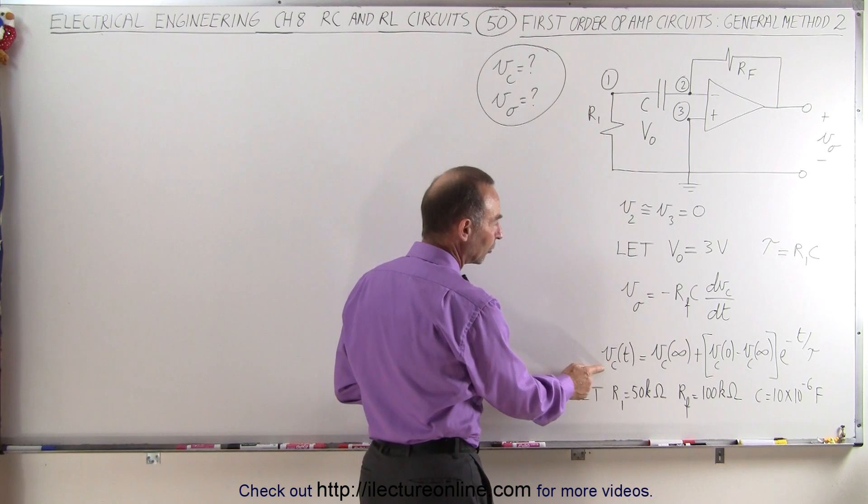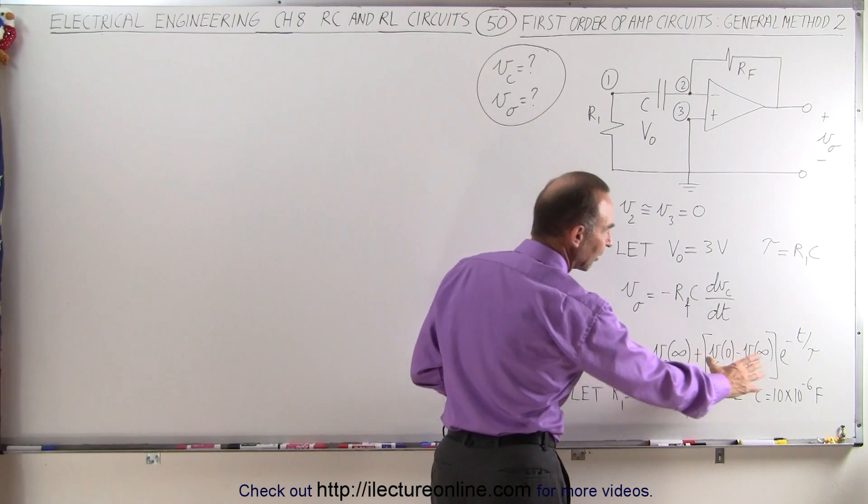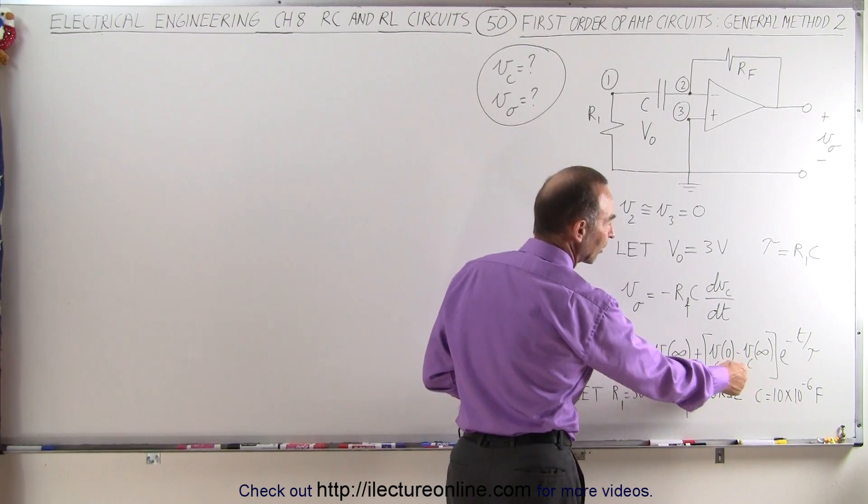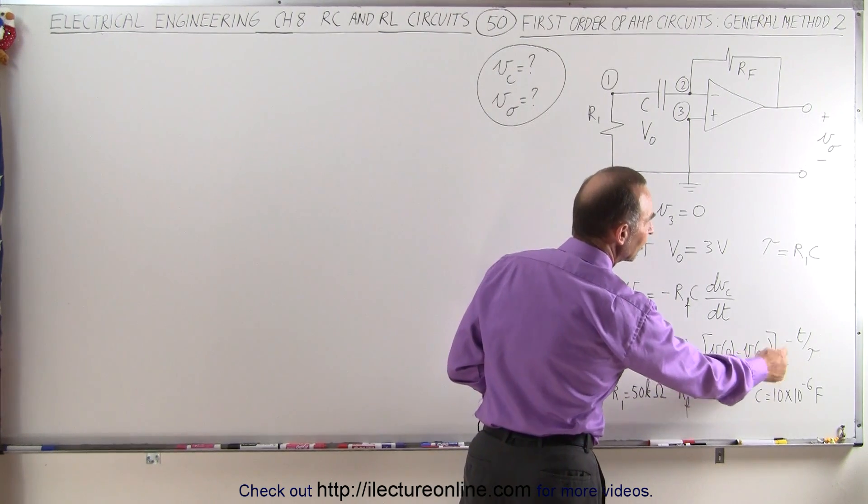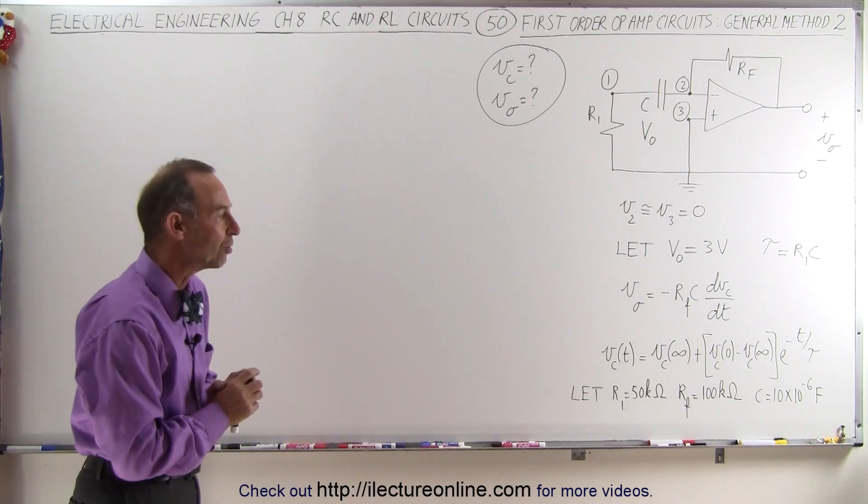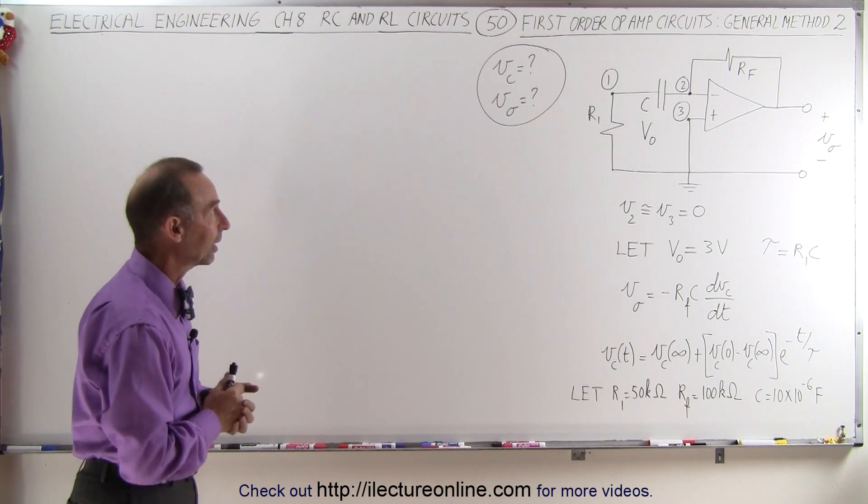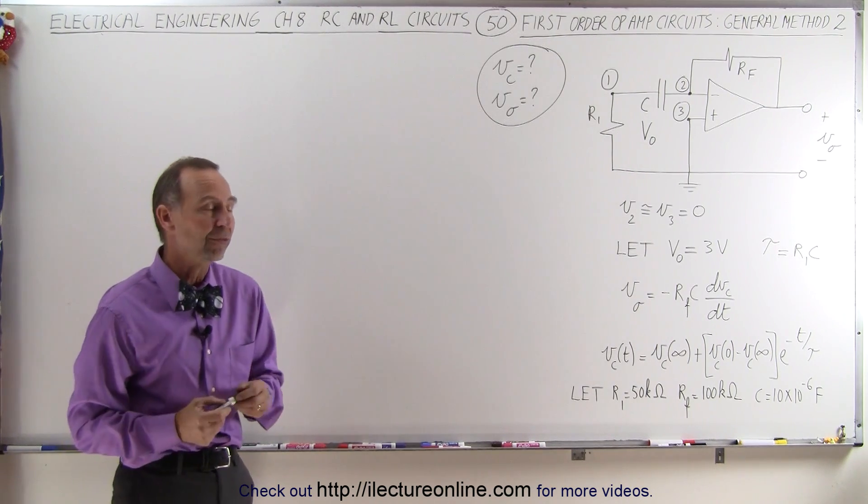We can say that the voltage across the capacitor is equal to the voltage when time is infinity, plus the difference between the voltage at zero minus the voltage at infinity, times e to the minus t over tau. By now that should be a familiar equation, and we can actually employ that in the very same way on a circuit like this, where we have an operational amplifier.